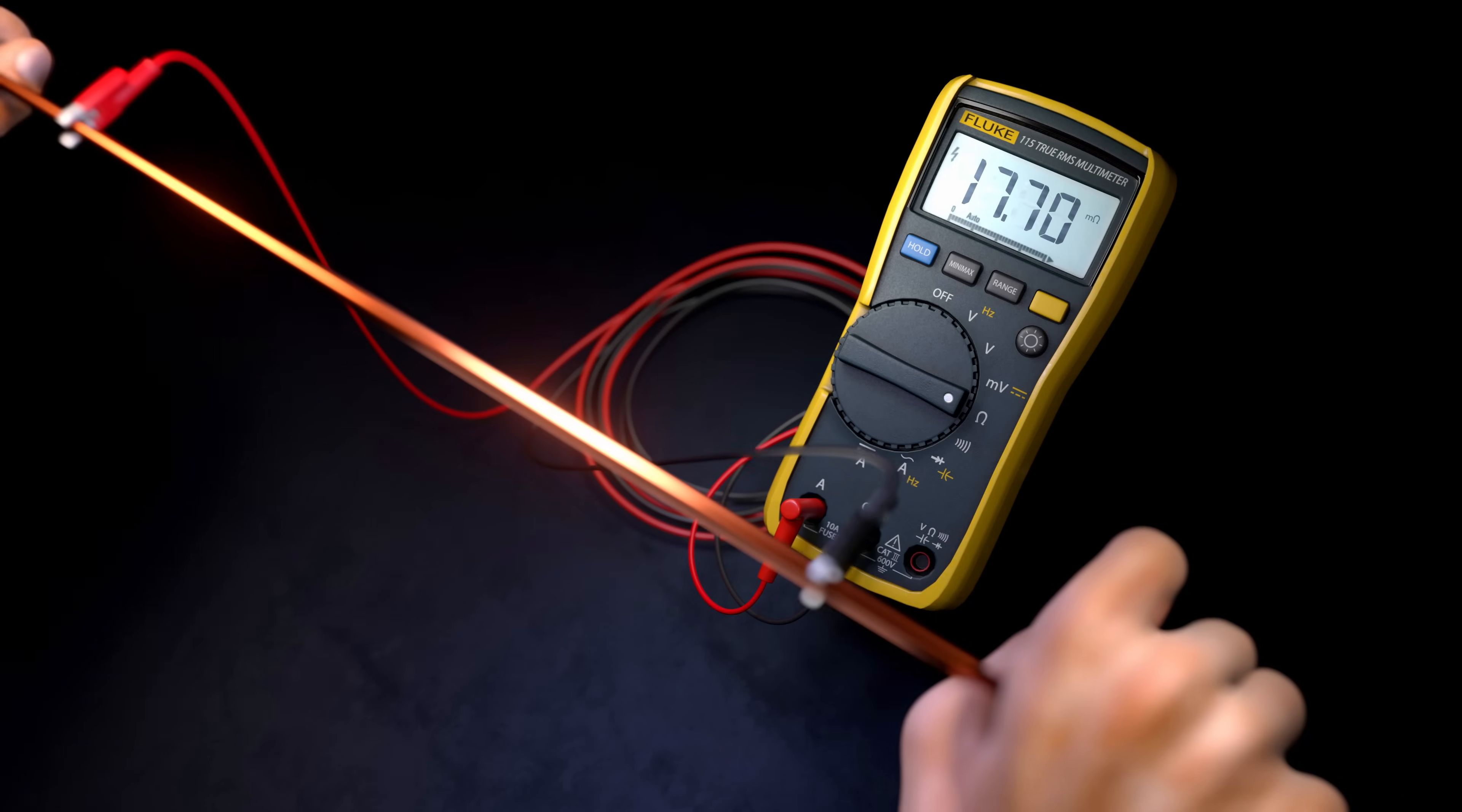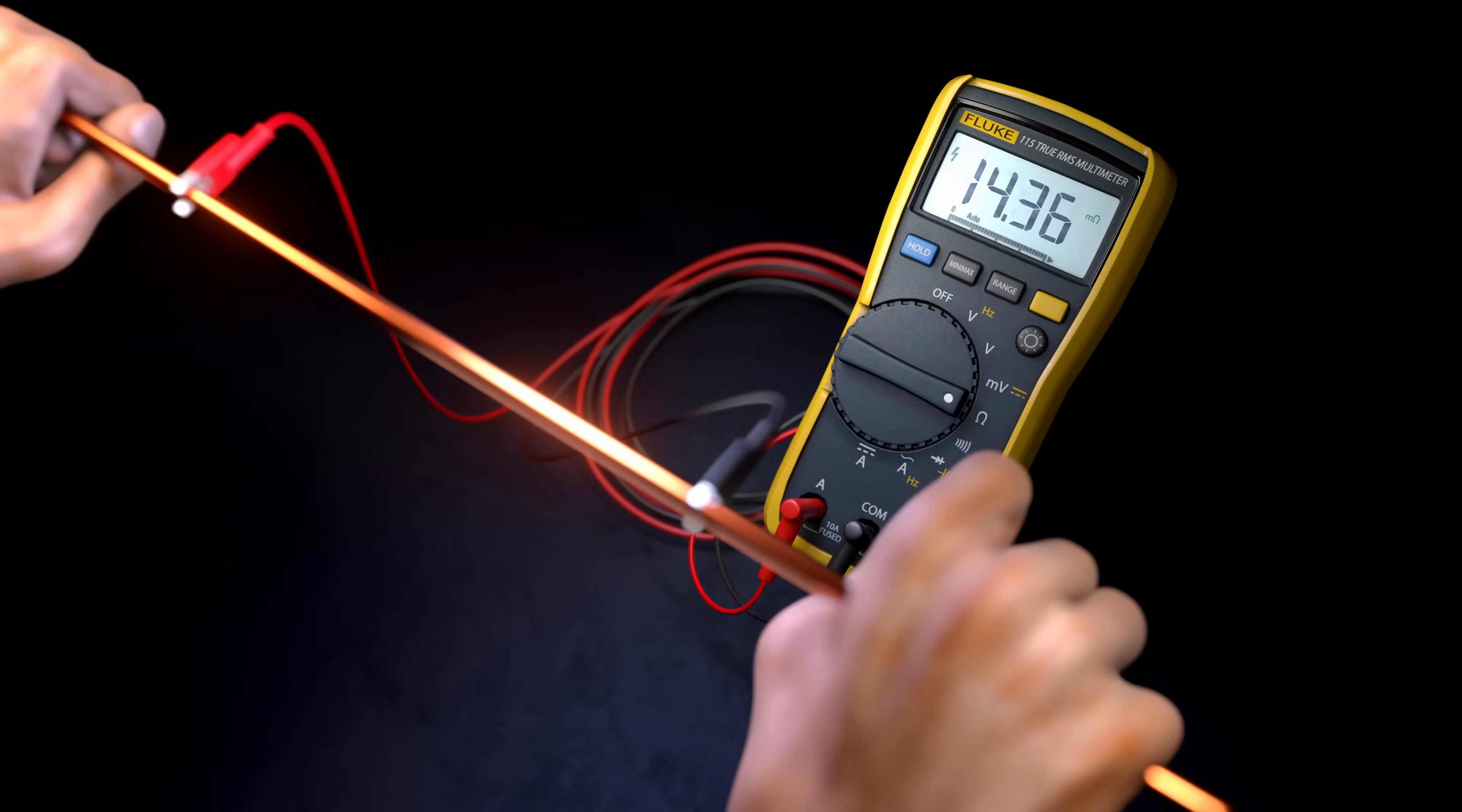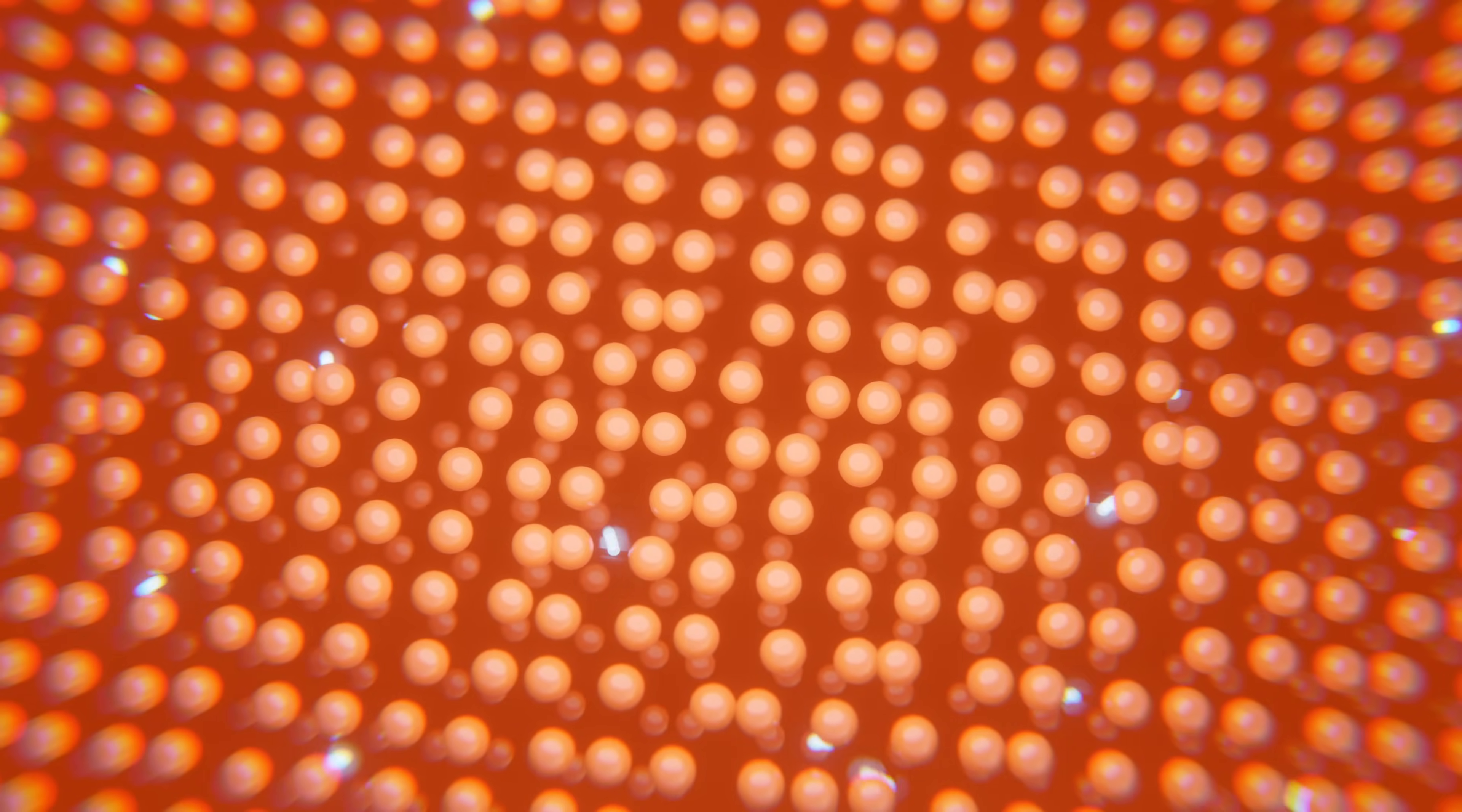This change in resistance as the wire is stretched is the result of three separate mechanisms- the reduction in the cross-sectional area of the wire, the increase in the wire length, and changes to the resistivity of the material itself due to the increased spacing between atoms, which affects how easily electrons can flow through the material.